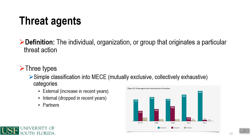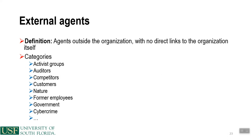Threat agents are the individual, organization, or group that originates a particular threat action. There are three mutually exclusive, collectively exhaustive categories: external threats, internal threat agents, and partners. External threat agents are outside the organization with no direct links to it. These could be activist groups, auditors, competitors, customers, nature itself — such as a hurricane — former employees, government actors, or cybercrime. For example, activist groups mix political activism with cybersecurity violations, governments could include Chinese APT hacks or Stuxnet, and cybercrime could include the Nigerian 419 scam.